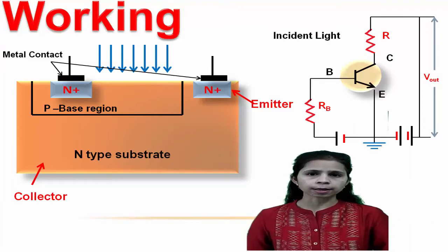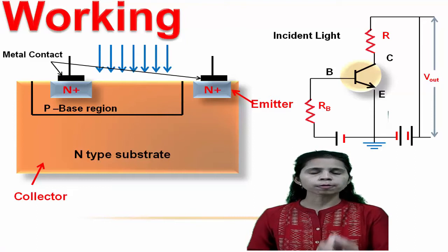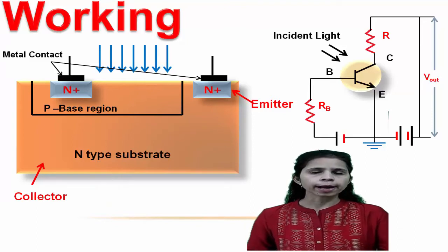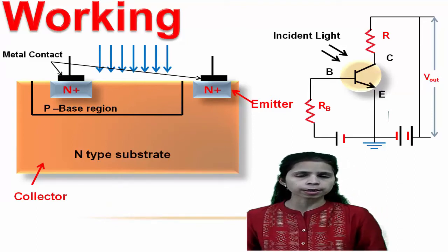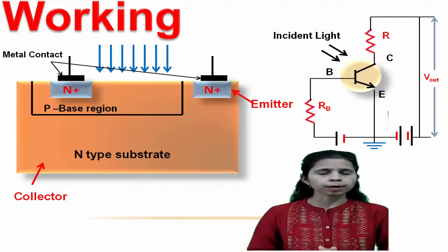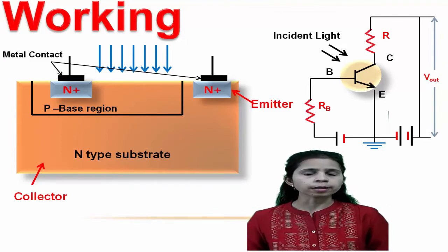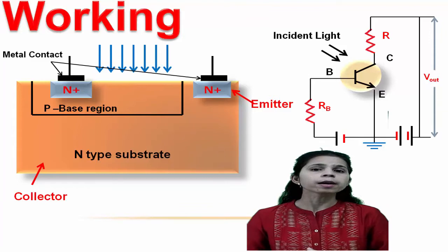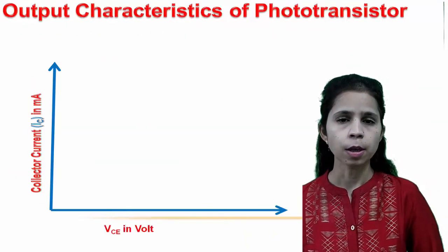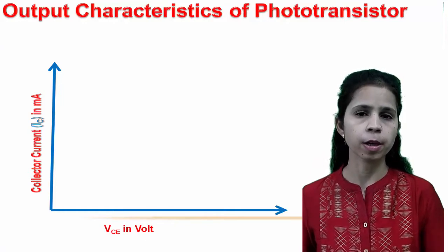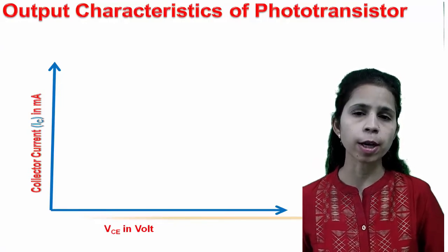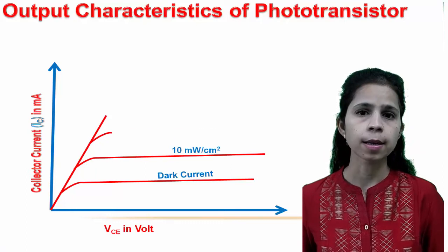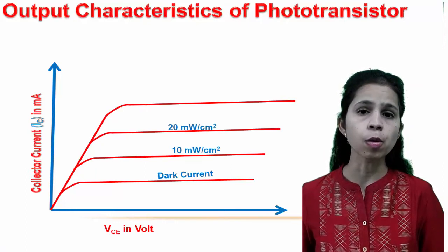In the phototransistor, the collector-base junction is reverse biased and the emitter-base junction is forward biased. The base terminal can be left open for incident light. When there is no light, there is only a very small reverse saturation current between base and collector due to minority charge carriers. When light falls on the base region, electron-hole pairs are generated and swept across by the electric field, increasing the emitter current and the collector-base current in reverse bias mode, thereby amplifying the current. As light intensity increases, the current through the phototransistor increases correspondingly.